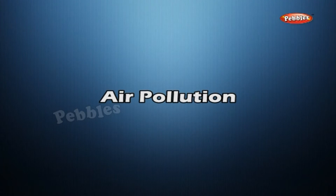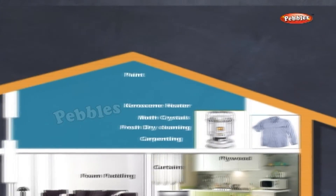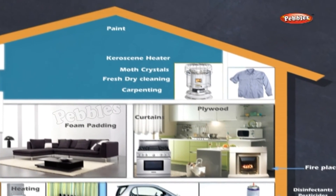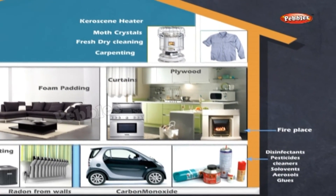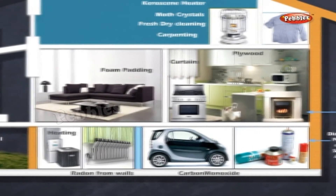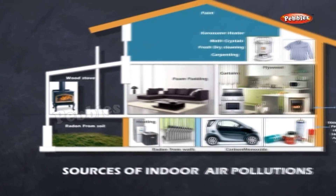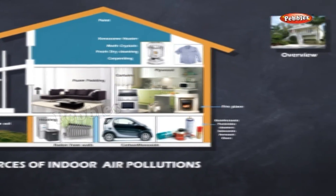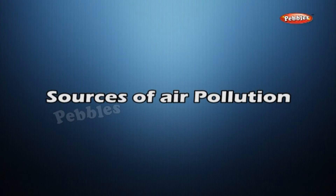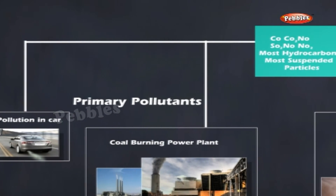Air Pollution: Air is a mixture of various gases such as nitrogen, oxygen, and carbon dioxide, etc. All these gases are present in a particular ratio. If some other substances are added to air, an imbalance is caused in the ratio of various gases and we say that air is polluted. All sources of air pollution can be classified into two groups: natural sources and man-made sources.